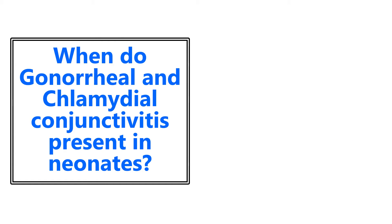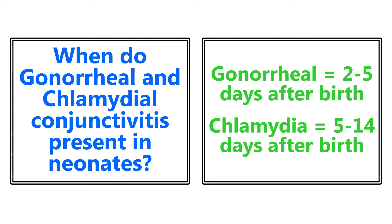When do gonorrheal and chlamydial conjunctivitis present in neonates? This is pretty high yield. Gonorrheal is typically first, and that's going to be two to five days after birth. Chlamydia is going to be five to 14 days after birth. The classic vignette will be a neonate with some conjunctivitis and some type of discharge, and they're going to give you how many days or weeks old that neonate is — that's a very important piece of information in differentiating if this is gonorrheal or chlamydial.